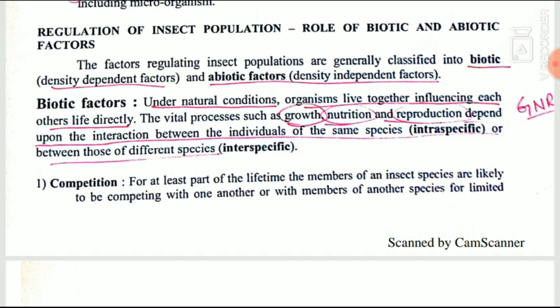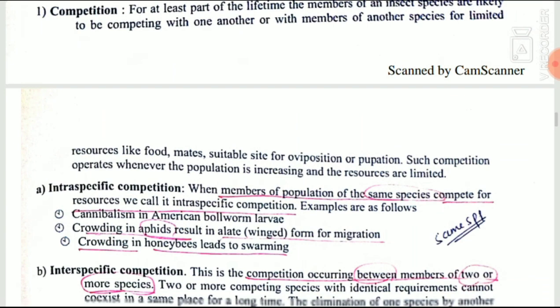Biotic factors are density dependent and abiotic factors are density independent factors. Biotic factors are those which influence the organism directly — they influence their growth, development, and nutrition. They may be of two types: intraspecific, meaning within the same species, and interspecific, meaning between different species.